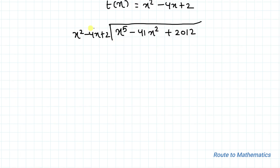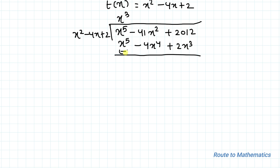For the division, the first quotient term is x³. So x² × x³ gives x⁵, and -4x × x³ gives -4x⁴, plus 2 × x³ gives 2x³. Now we take the opposite signs for subtraction.